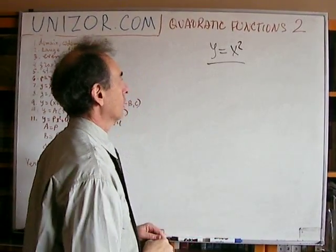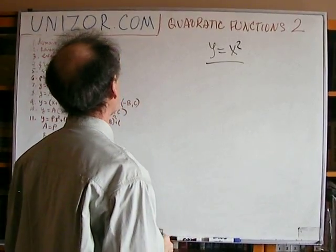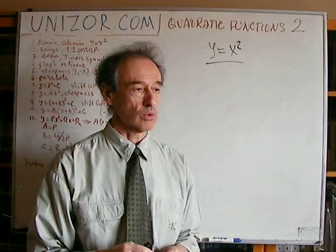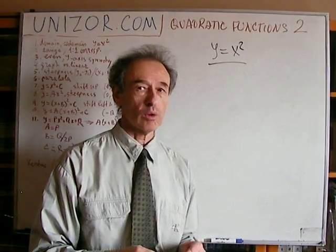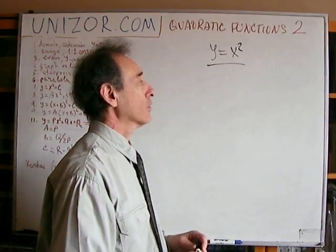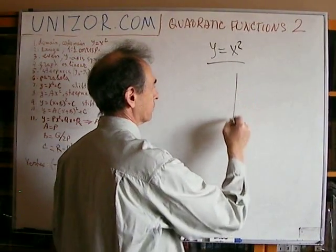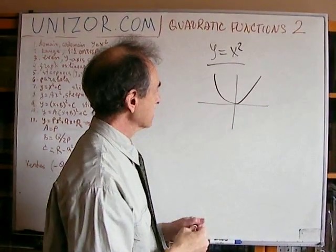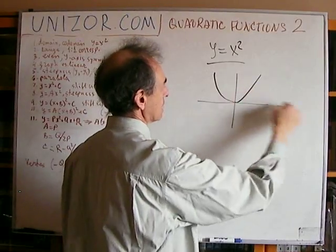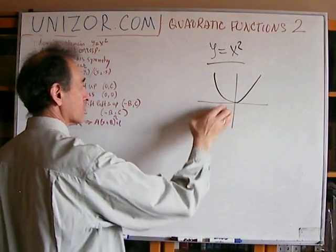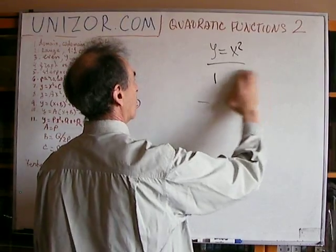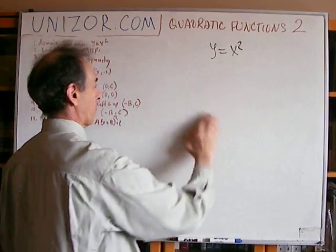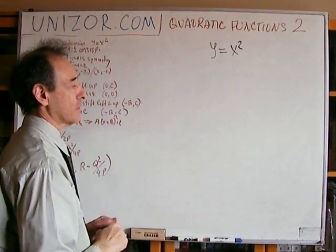By now, we all know that this is the function which has a domain of all real numbers, range all non-negative real numbers. We know that the graph is a parabola which has a steepness increasing as we increase the arguments. We know that the function is even. Now let's try to generalize whatever we know about this particular function.